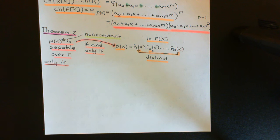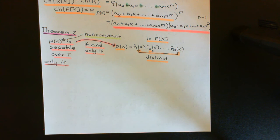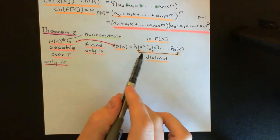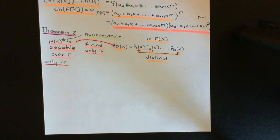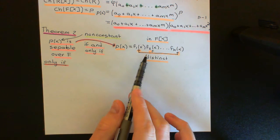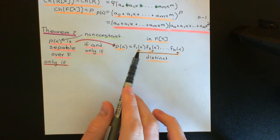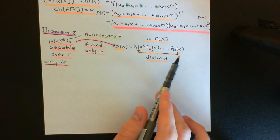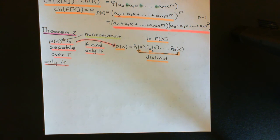We start with the assumption that P(X) is separable over F. That means if you create the splitting field for this polynomial, over that splitting field P(X) splits into linear factors with all roots simple — no multiplicity greater than 1. We prove the implication by contradiction: suppose the irreducible factorisation does not have all distinct irreducibles.